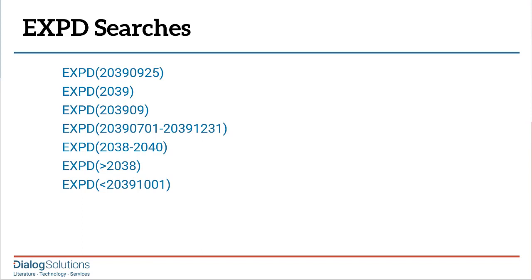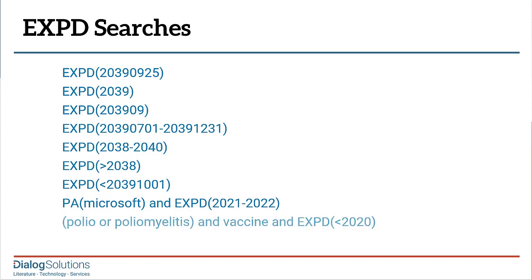The EXPD search can be run alone or in combination with other searches, such as a patent assignee search. Here we're looking for any Microsoft patents that are calculated to expire in 2021 or 2022. You might do this kind of search for competitive intelligence, or for your own company as a way to track which of your important patents are coming up on an expiration date.